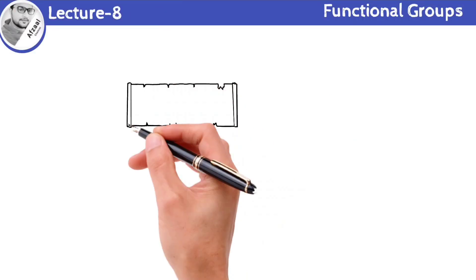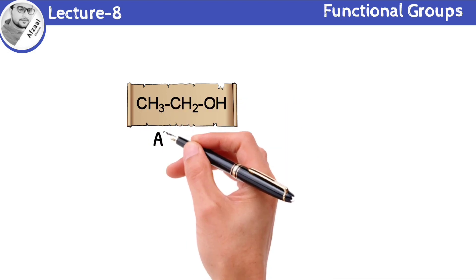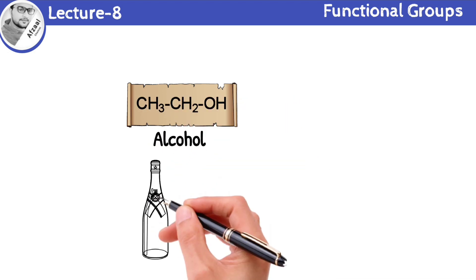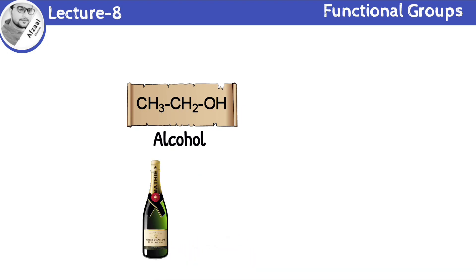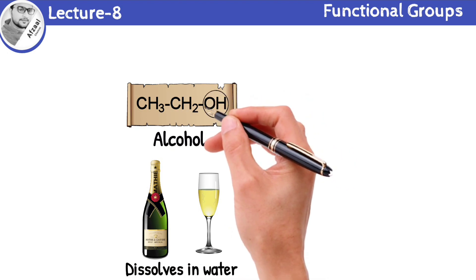I have some examples for you. Ethanol is a type of alcohol that is commonly found in alcoholic beverages. One interesting property of ethanol is it can dissolve in water. This is because the hydroxyl group in ethanol forms hydrogen bonding with water molecules.